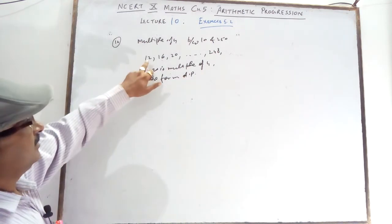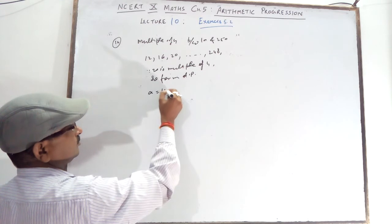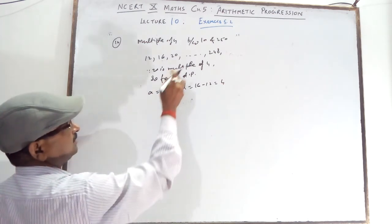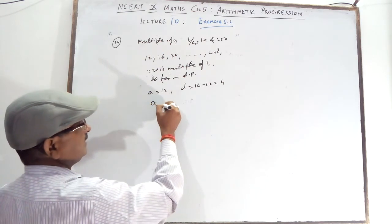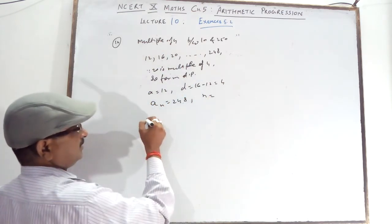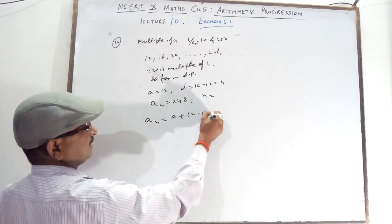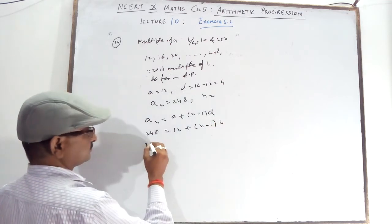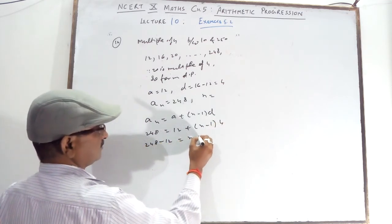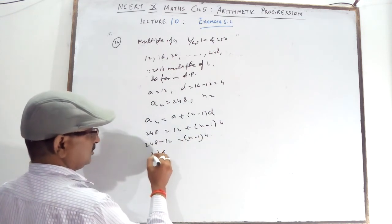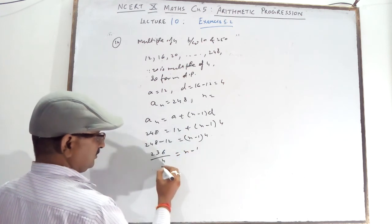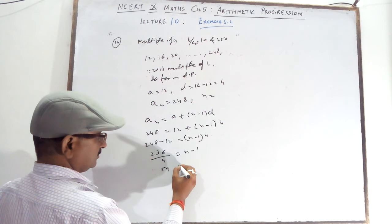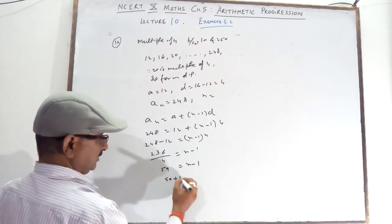So A equals 12, D equals 16 minus 12 equals 4, and An equals 248. Apply the formula: 248 equals 12 plus (N minus 1) into 4. That gives 248 minus 12 equals 236, so 236 divided by 4 equals N minus 1, giving N minus 1 equals 59.